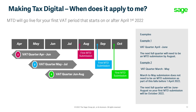Your first Making Tax Digital submission will be your first full VAT period after April 1st. For monthly submissions, this will be your first return for April. If you submit on a quarterly basis, it will be your first full quarter after April 1st. For example, if your first VAT period is April to June, this submission will need to be completed and submitted digitally by August 7th. However, if your return runs from March to May, that submission can still be submitted as usual — it will be your June to August return which falls under Making Tax Digital rules and will need to be submitted by October 7th, 2022.